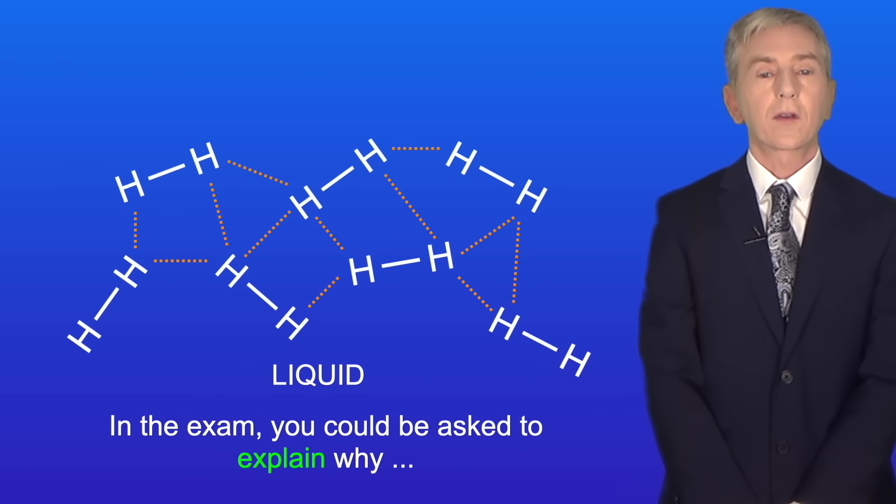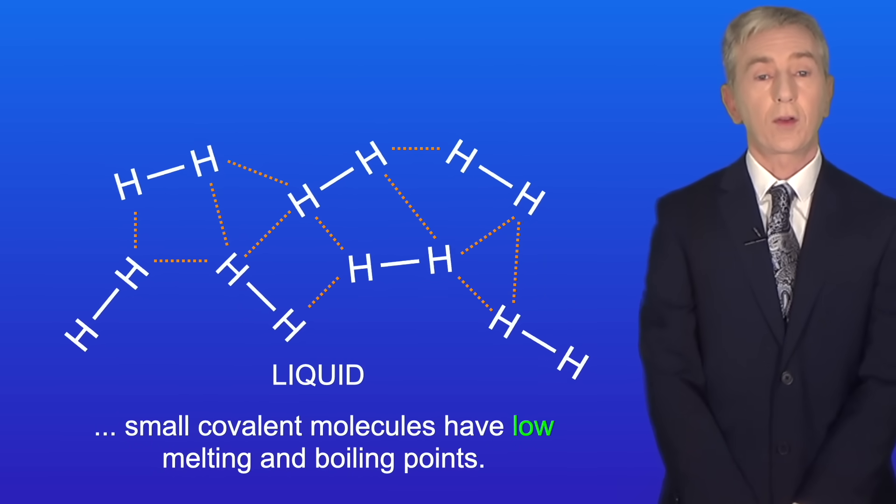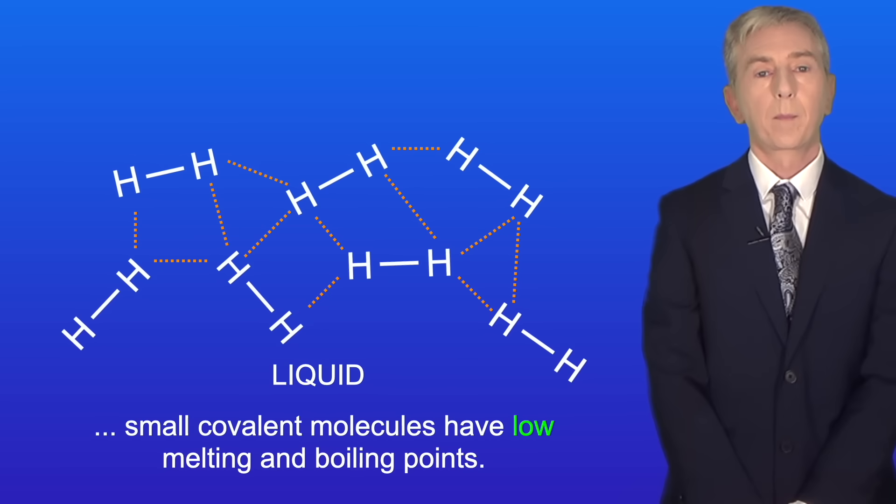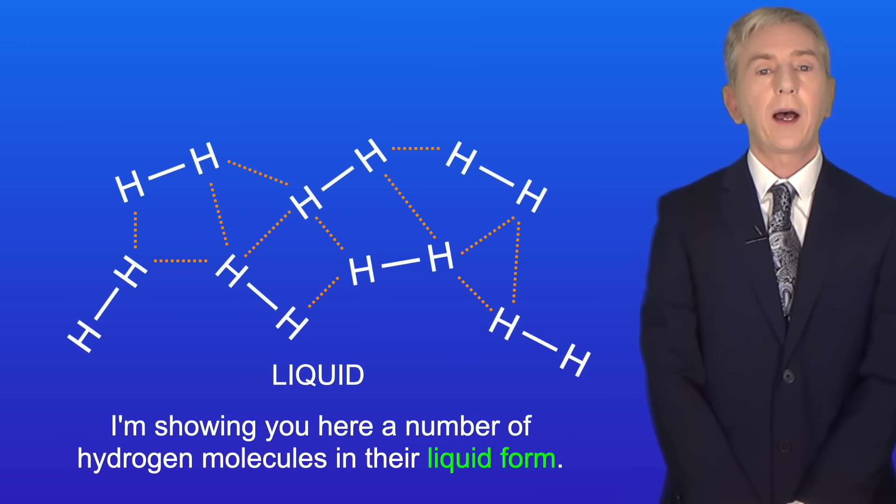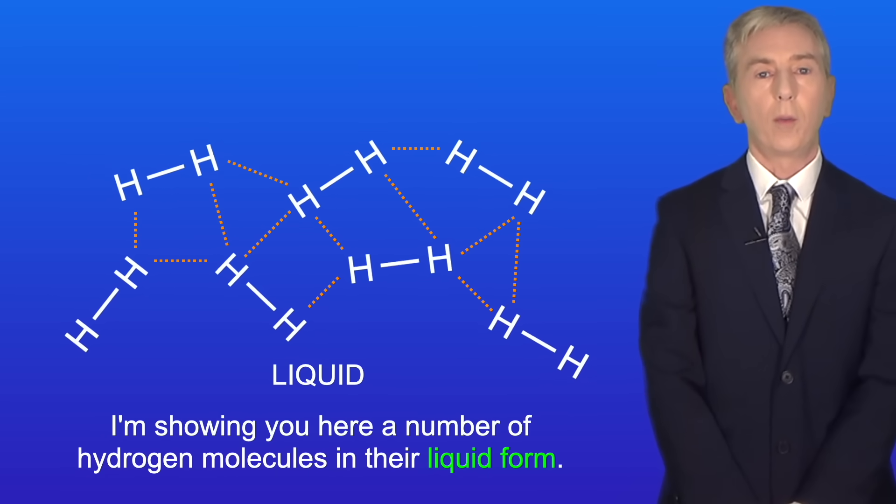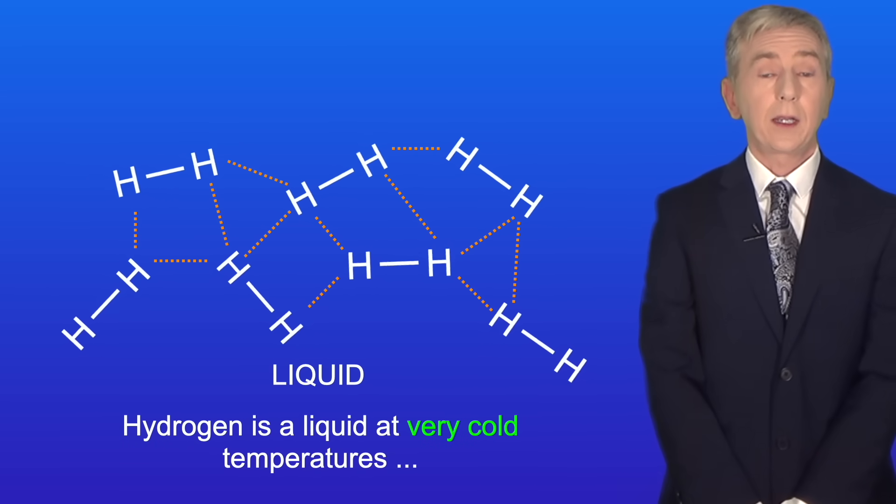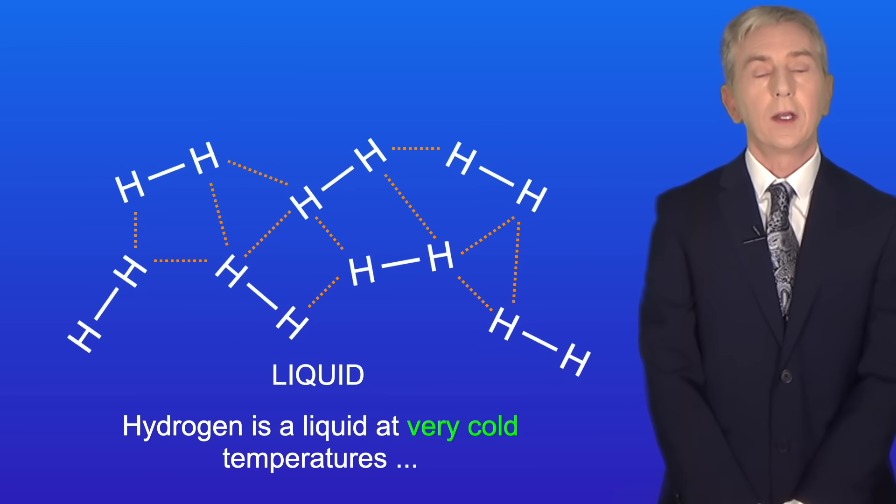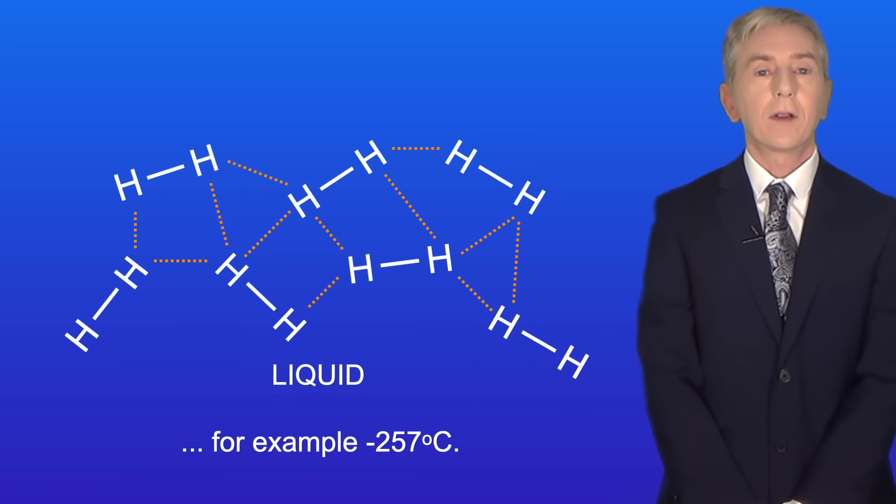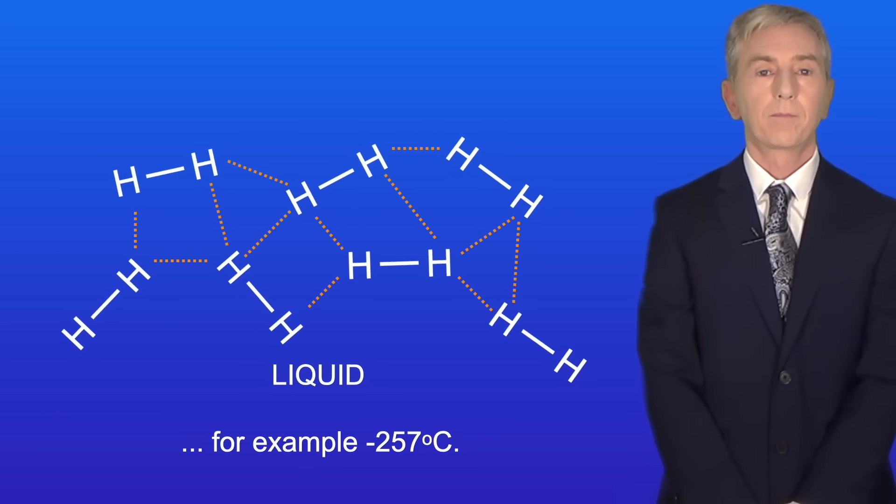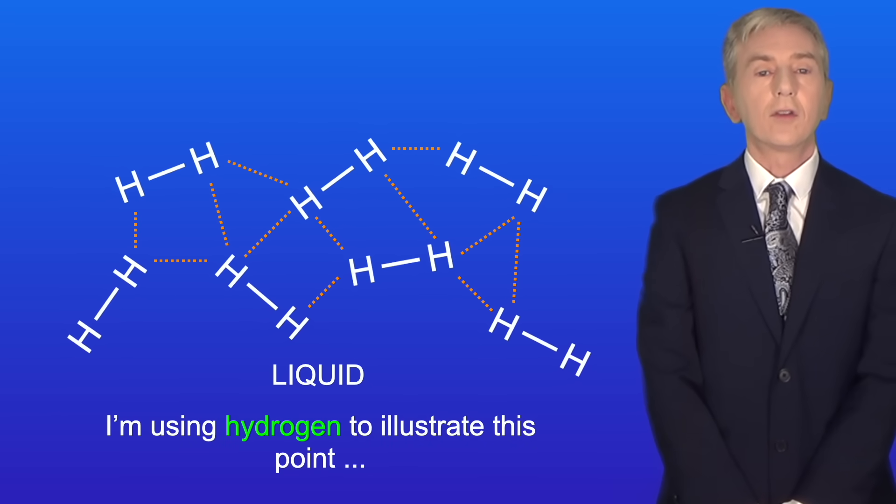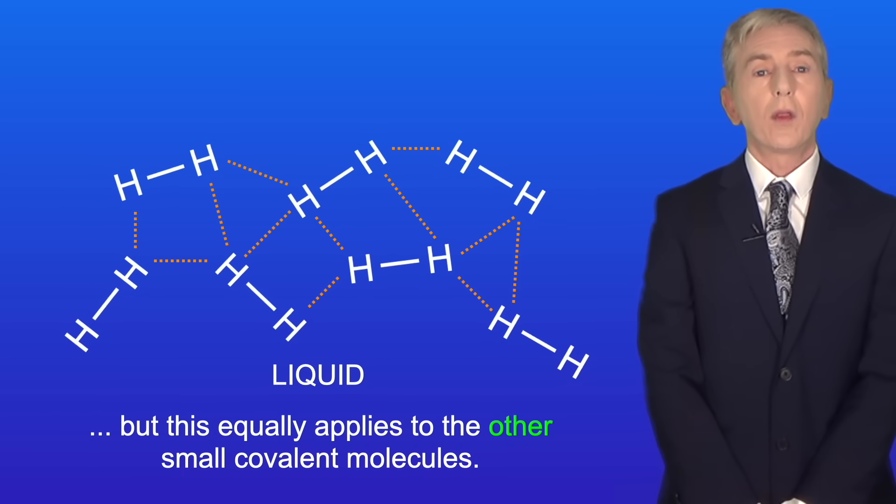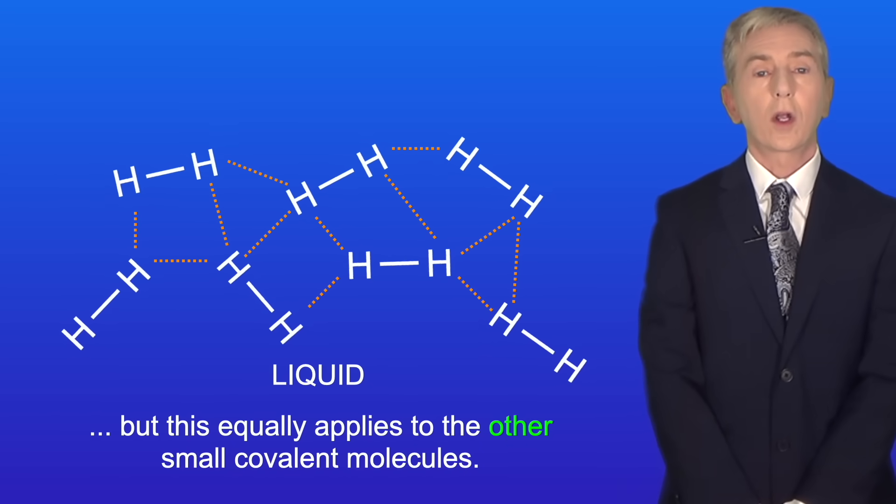Now in the exam you could be asked to explain why small covalent molecules have low melting and boiling points. I'm showing you here a number of hydrogen molecules in their liquid form. Hydrogen is a liquid at very cold temperatures, for example minus 257 degrees Celsius. I'm using hydrogen to illustrate this point but this equally applies to other small covalent molecules.